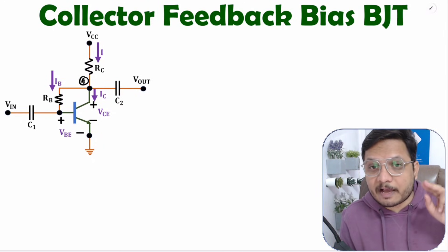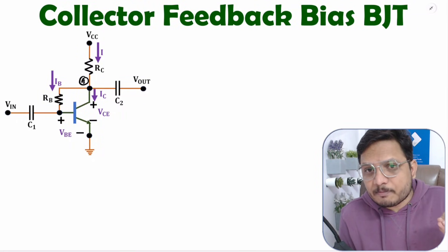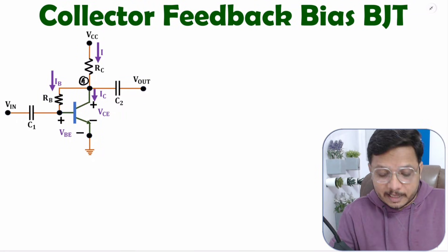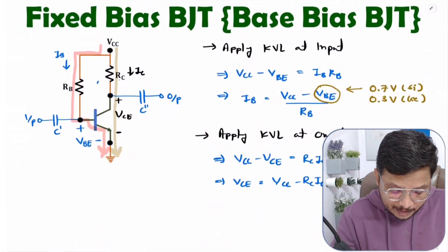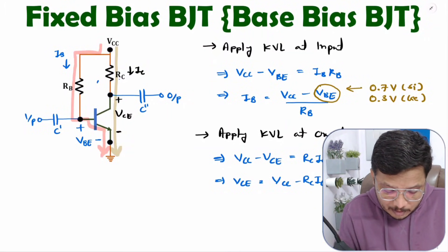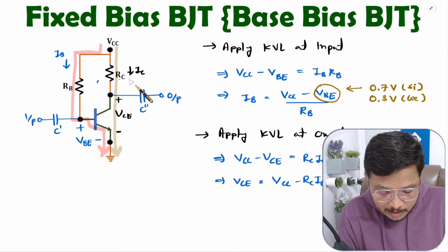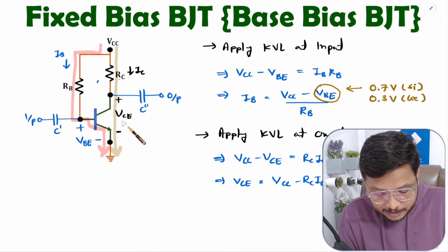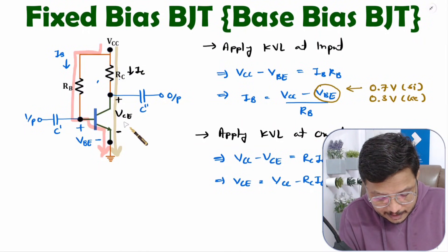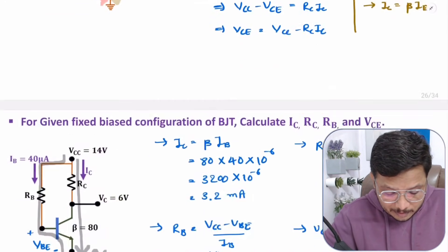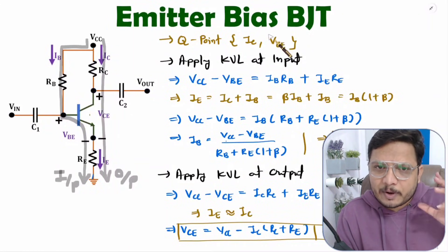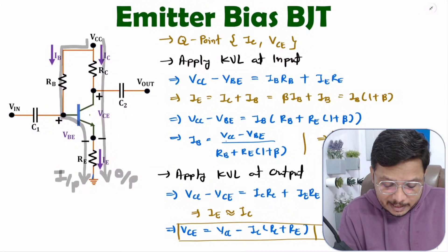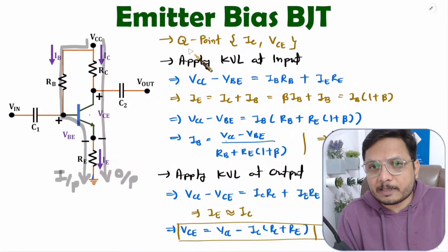In my last two videos I have already covered emitter bias of BJT as well as fixed bias of BJT. In those videos I explained how we can find the operating point of fixed bias and emitter bias. Operating point means we are looking to find output current IC and output voltage VCE for common emitter configuration. With emitter bias there were a few advantages regarding stability of the operating point.